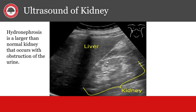An ultrasound of the kidney can help us assess kidney size. This is important as acute kidney injury may have an enlarged kidney, which is called hydronephrosis. In chronic kidney disease, the kidney is usually smaller than normal.